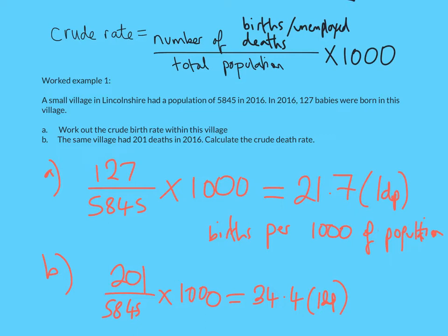However, this can be quite misleading. We know there are around 34 deaths per 1,000 in this village, but comparing this with other villages isn't very useful because each area has a different age makeup. A village of mainly retired people will have a higher death rate than one with lots of young couples and families. Because the age distribution differs across every population, we need a way to compare them — and we do this with something called a standard population.